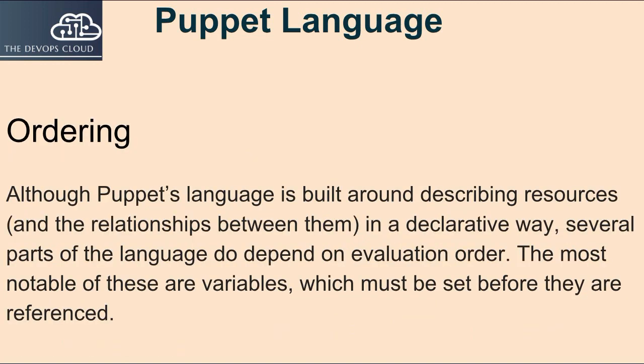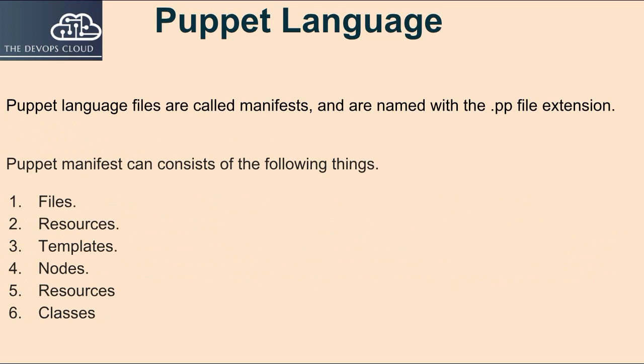Although Puppet's language is built around describing resources and the relationships between them in a declarative way, several parts of the language do depend on evaluation order. The most notable of these are variables, which must be set before they are referenced. Puppet language files are called manifests, and are named with the .pp file extension.